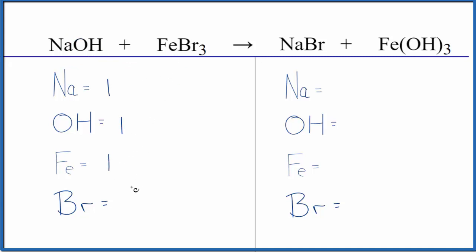one iron, and then three bromine atoms. In the products, one sodium, one hydroxide times three. So we have three of those, one iron and one bromine.